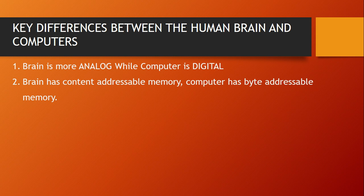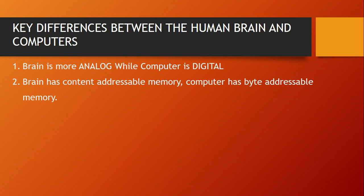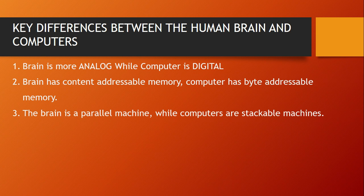The brain can perform many more actions compared to a computer. The brain has content addressable memory, whereas the computer has byte addressable memory. In computers, information stored in memory is accessed by locating the exact memory location — just like going to the bank and taking out items in locker number 10. Whereas in human beings, if we think about school, we don't think only of school but also the school building, friends, teachers — all our memories come into our mind the moment we think about a particular thing. The brain is a parallel machine, whereas computers are stackable.